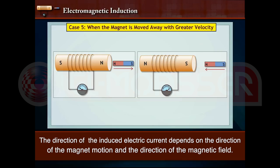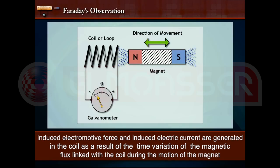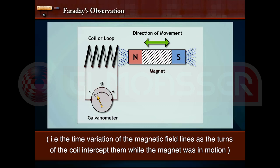Induced electromotive force and induced electric current are generated in the coil as a result of the time variation of the magnetic flux linked with the coil during the motion of the magnet.